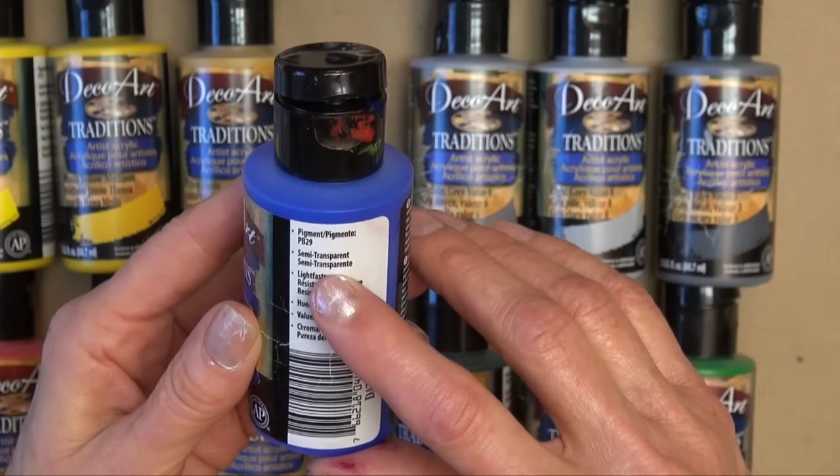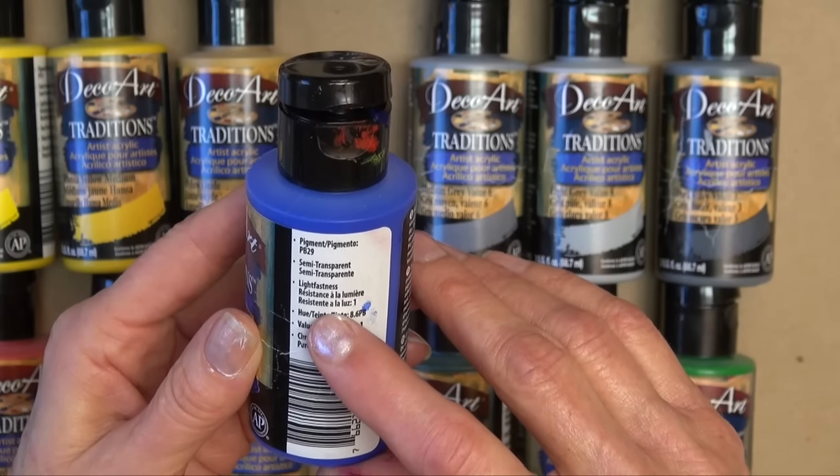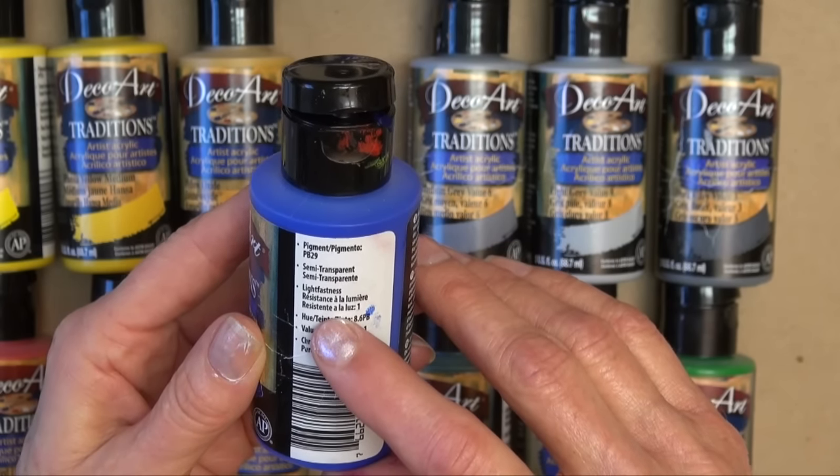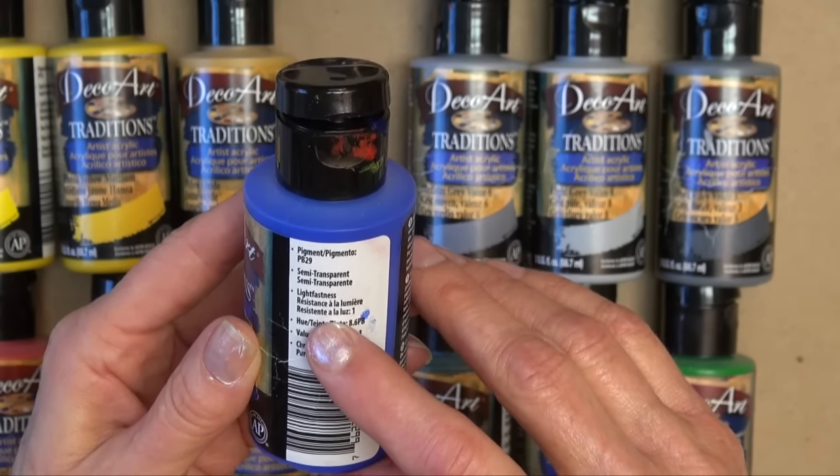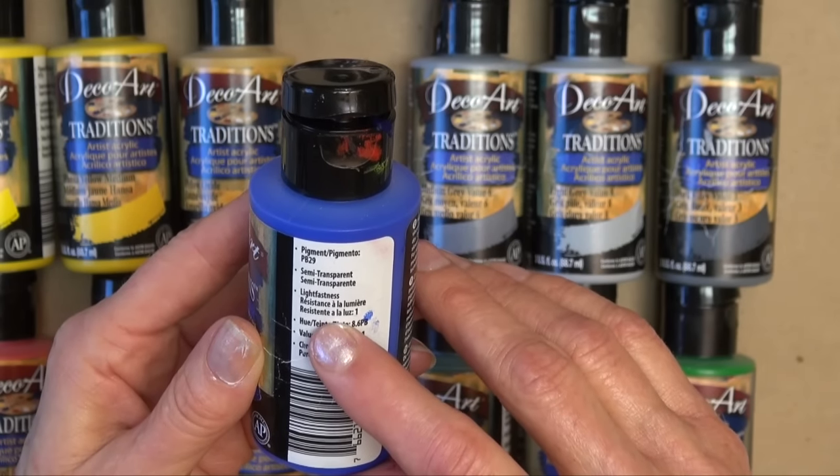It also tells you that this is semi-transparent. Its lightfastness is number one. Now lightfastness is very important to know in your paint because if you have lightfast number one, your paint will not fade.